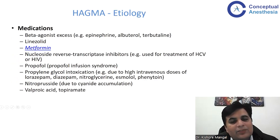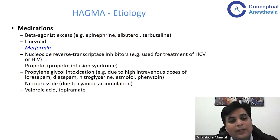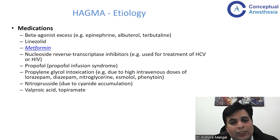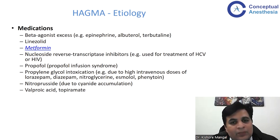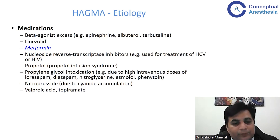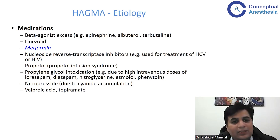There are many medications which can cause high anion gap metabolic acidosis. These include beta-agonist excess — especially in patients with COPD or asthma who need a lot of nebulization, such as epinephrine or albuterol, which can lead to high anion gap metabolic acidosis. Others include linezolid, metformin, NRTIs, propofol (very important from an anesthesia point of view), propylene glycol intoxication, nitroprusside, valproic acid, and topiramate. These are the common medication-related causes of high anion gap metabolic acidosis.